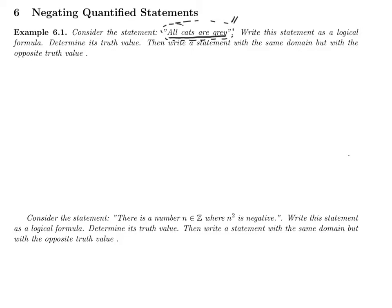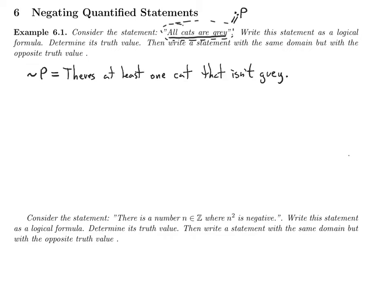The negation — let's call this P, so if P is 'all cats are gray,' then not-P is: there's at least one cat that isn't gray. You could write this in a bunch of different ways; instead of saying 'there's at least one' you could say 'there exists a cat that isn't gray.'